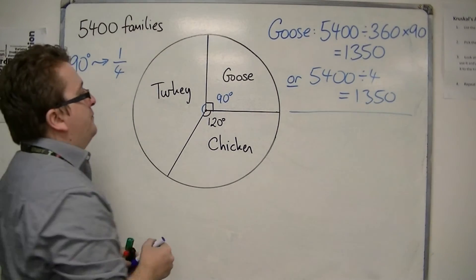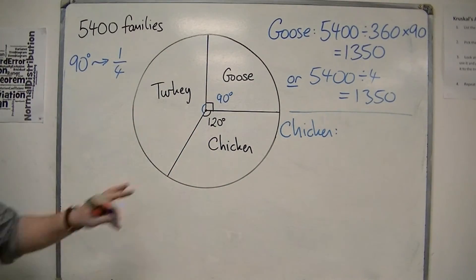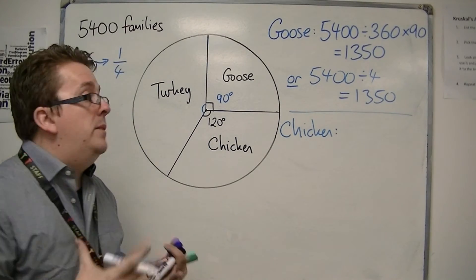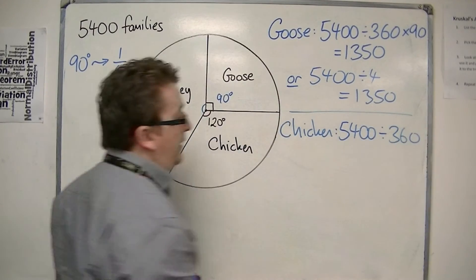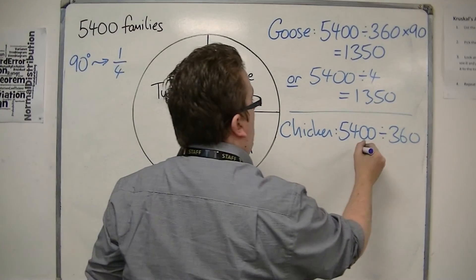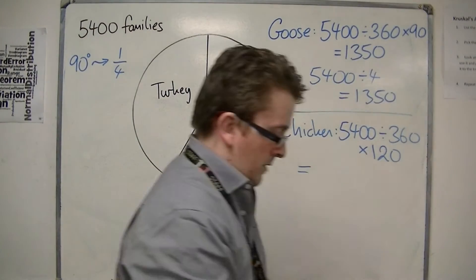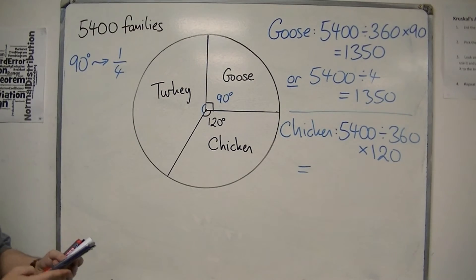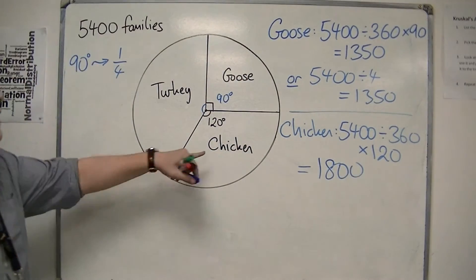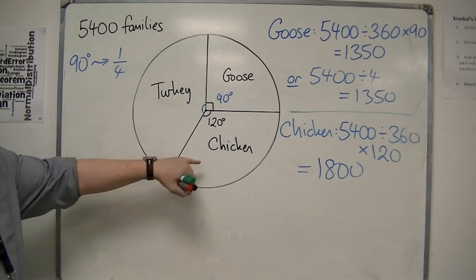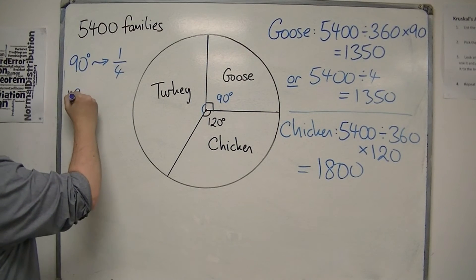Now we're going to have a look at chicken. For chicken, this is 120 degrees, so we're going to do exactly the same thing. We're going to split the 5,400 families up into 360 pieces, and then multiply by how many degrees we want — so multiply by 120. So 5,400 divided by 360, times by 120, is 1,800. So 1,800 families are going to have chicken.